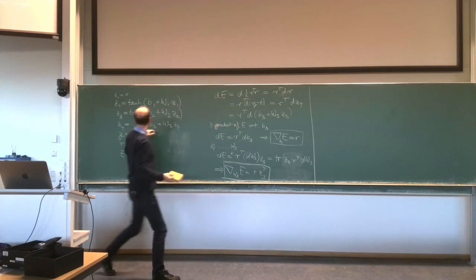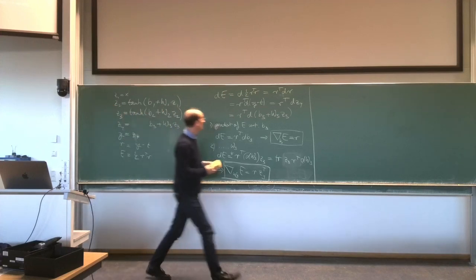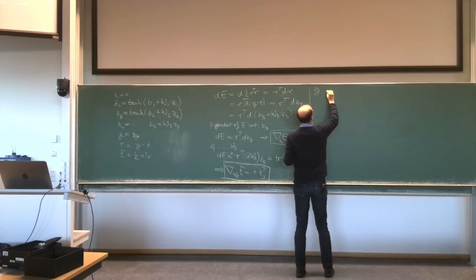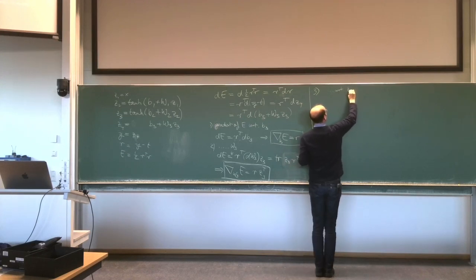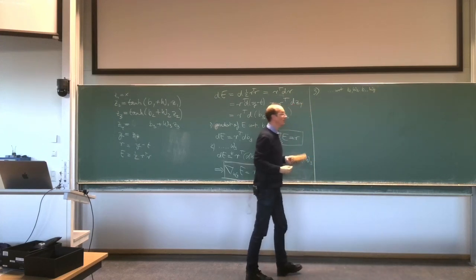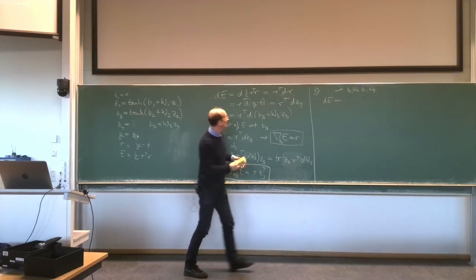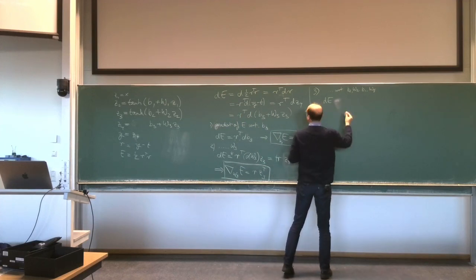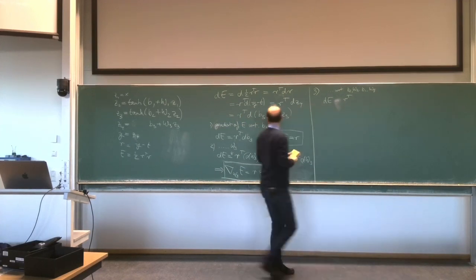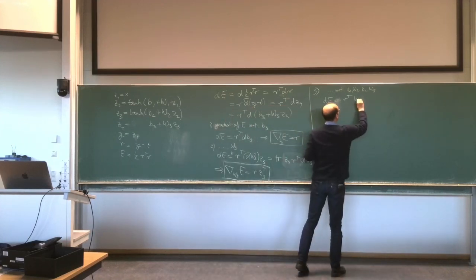To get to the other parameters B2 and W2, we continue with the third case. Starting from the derivation: dE equals R-transpose W3 dZ3. Now B3 disappears and W3 is kept as a constant factor. The next step is to plug in the expression for Z3, which involves the tangent hyperbolicus of B2 plus W2 Z2. This is something new we haven't seen yet — we need a formula to pass the differential through a nonlinearity.